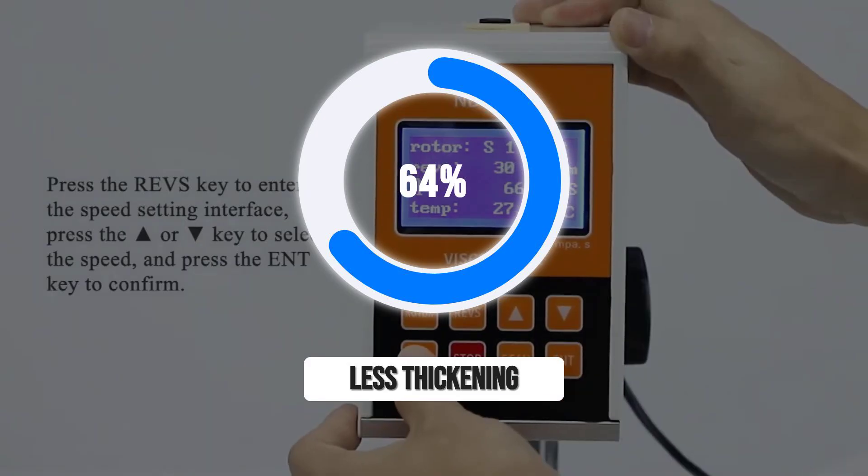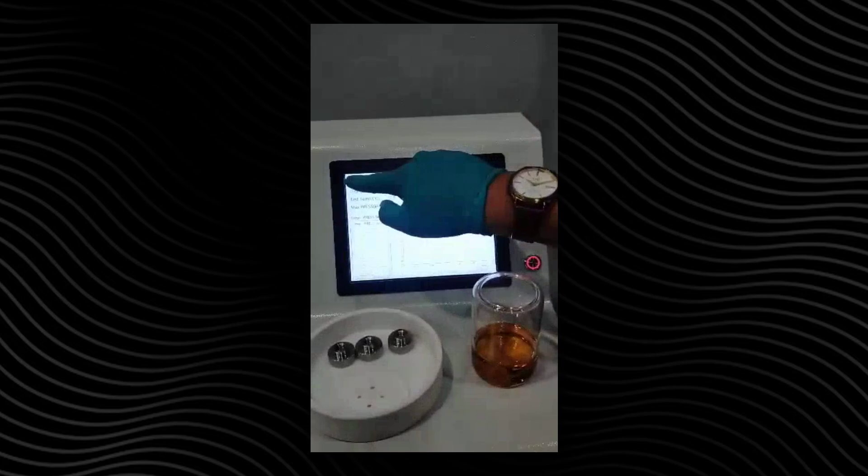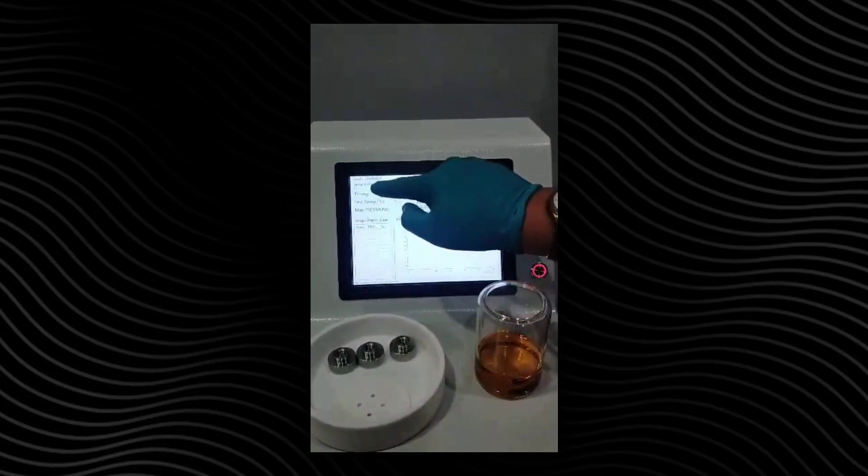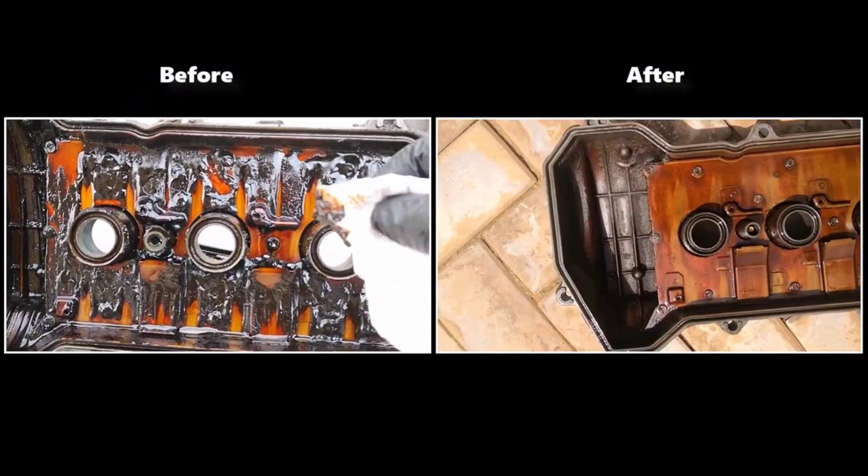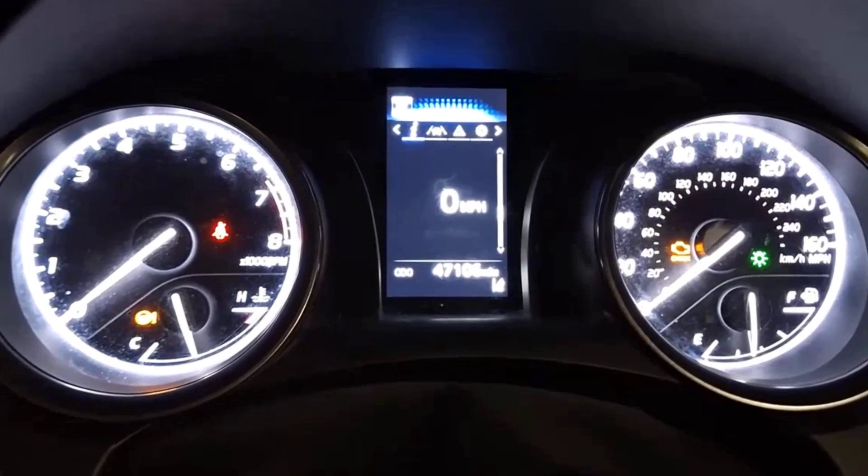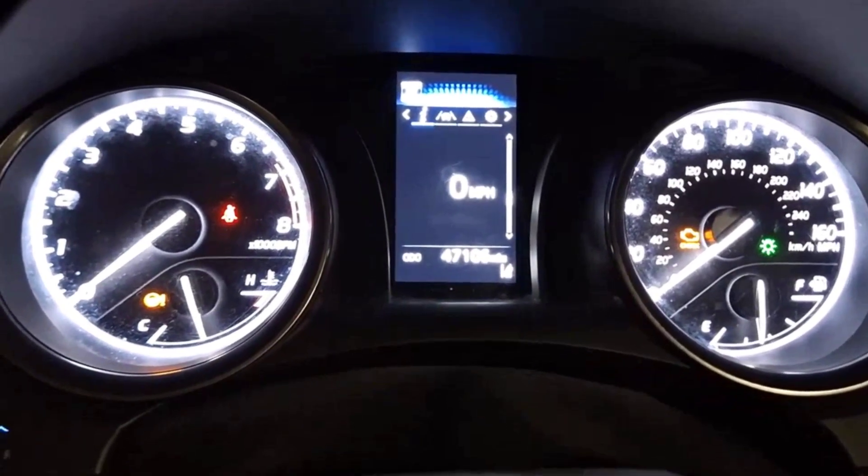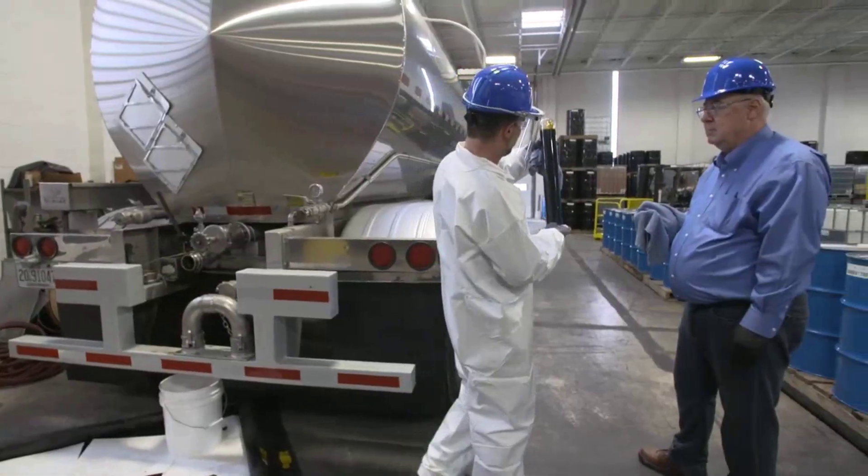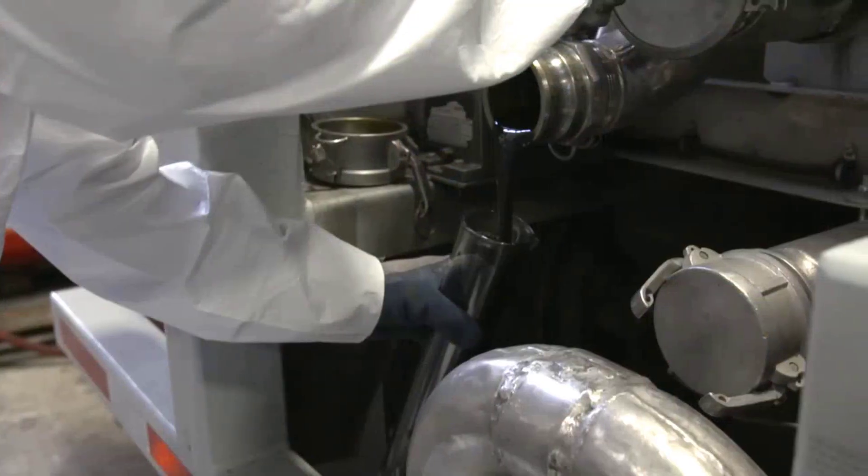That means the oil resists thickening and sludge, holding its protective qualities far beyond the standard drain interval. Fleet used oil analyses back up these numbers, with samples pulled after 15,000 miles still showing strong total base number reserves and minimal oxidation byproducts.